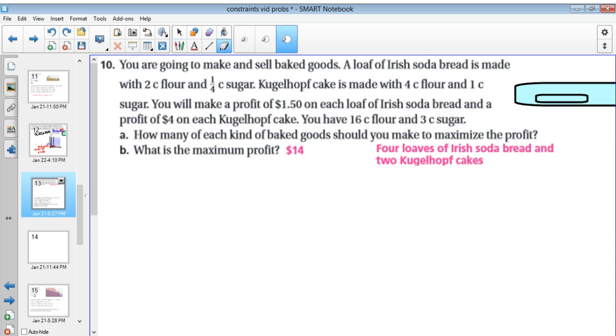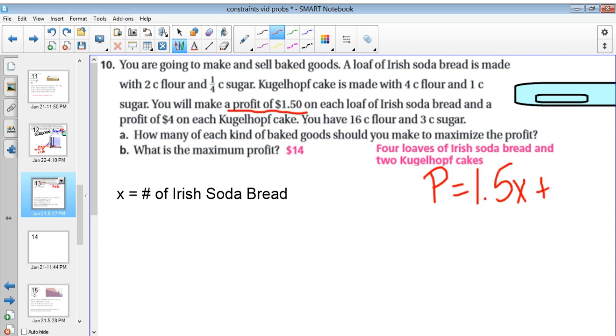So the first thing we need to do is we need to define our variables. So let's do that. And we will find that X is going to be equal to the number of Irish soda bread. And I know in the problem, it talks a lot about flour and sugar, but we're going to use that flour and sugar to kind of compare the two because we know our profit, our profit sentence down here, make a profit of $2.50 for each loaf of Irish soda bread and $4 for each Kugelhopf cake. That is actually going to be our, that kind of defines what our variables are going to be because we need to have something in terms of those profit. And we can't use flour and sugar for our X and Y. So we would actually have P would be equal to 1.5X plus 4Y. And let's define that other variable. Our other variable would be Y equals the Kugelhopf.